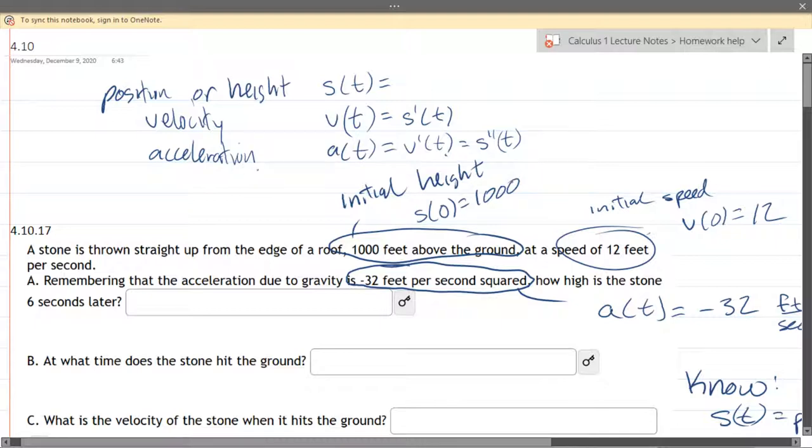Now a thousand is the height above the ground but what time does this happen? We have to read the problem. Stone is thrown straight up from the edge of the roof. The roof is a thousand feet above the ground so at the initial time at zero time the height is one thousand. So that's how I got s of zero equals one thousand right there.